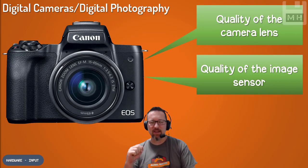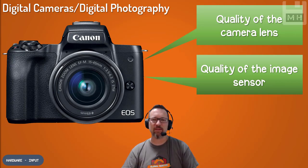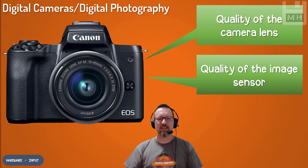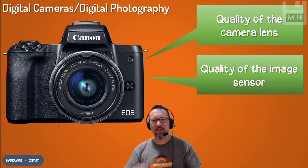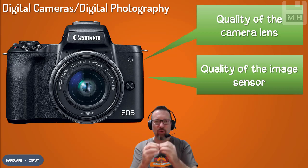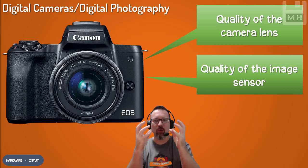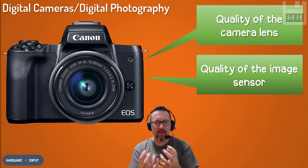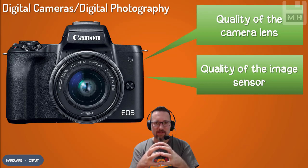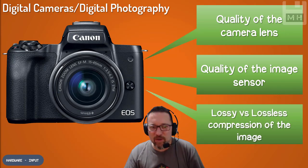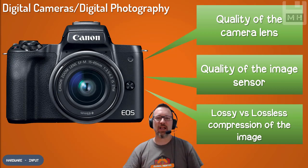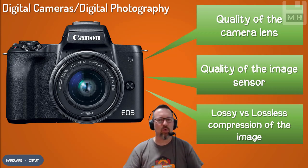The quality of the image sensor goes hand in hand with the lens. The image sensor is a special sensor inside the camera that senses and records all the light data coming in, and then records that information in pixels — that's very important.